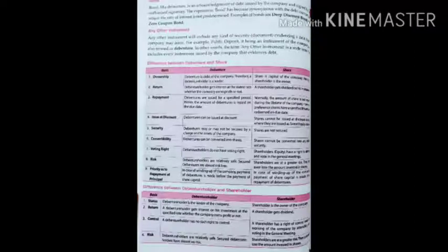Return: a debenture holder gets interest at the stated rate whether the company has profit or not. A shareholder gets dividend on his investment but subject to the availability of profit. Repayment: debentures are issued for a specified period and the amount is repaid on the due date. Normally the amount of a share is not repaid during the lifetime of the company; however, preference shares have a specified life and are redeemed on the due date.